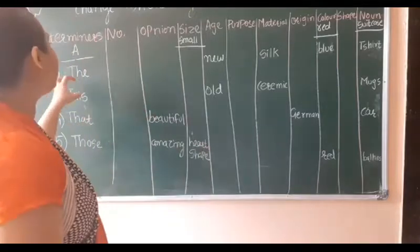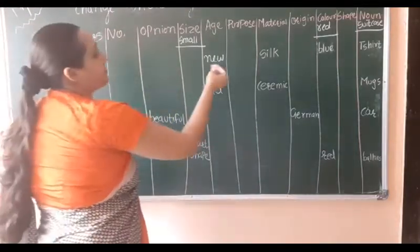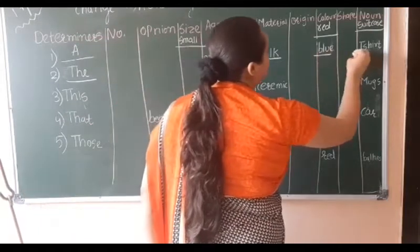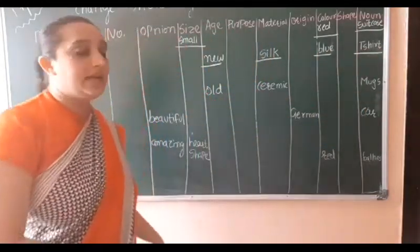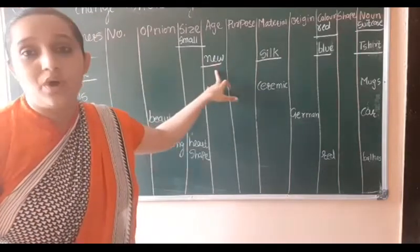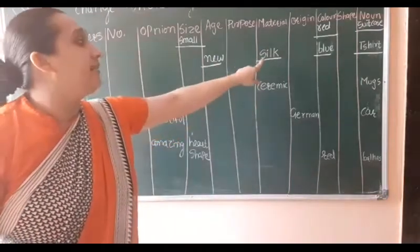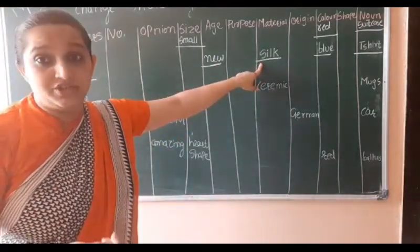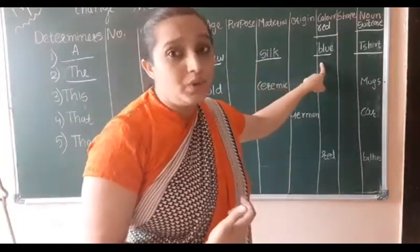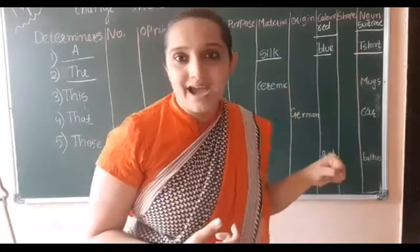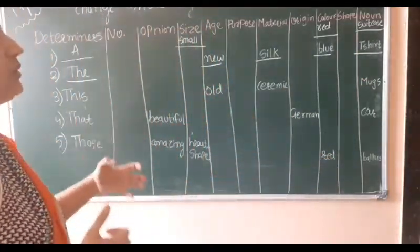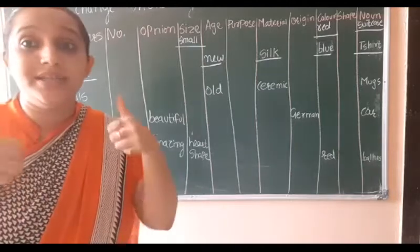Second example: the new silk blue t-shirt. 'The' is a determiner, 'new' is age, 'silk' is material, 'blue' is color, and 't-shirt' is the noun. So the new silk blue t-shirt follows this order.